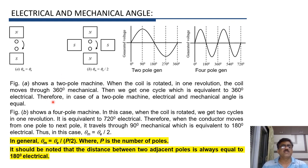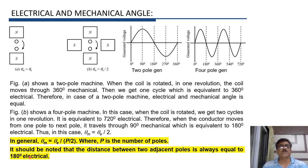Between these two poles, when the conductor moves from north pole to south pole, we get one half-cycle, that is 180 degrees electrical. It should be noted that the distance between two adjacent poles is always equal to 180 degrees electrical.